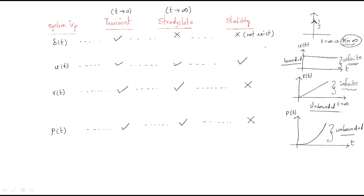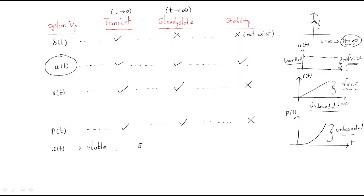So why are we discussing all these signals? By observing all the signals above, we can see that only the unit step signal u(t) has the transient state, steady state, and stability. The unit step is the only stable system. Analyzing a stable system is very interesting, while understanding an unstable system is difficult. That is why we select the unit step signal for study.